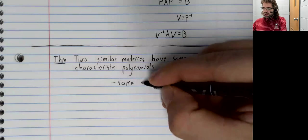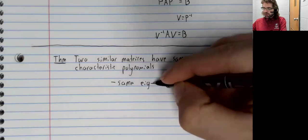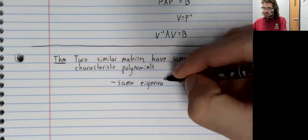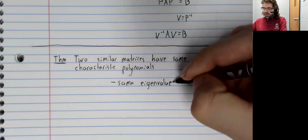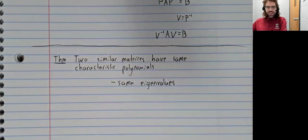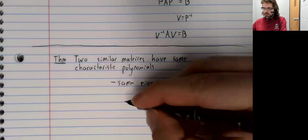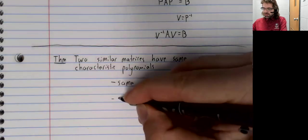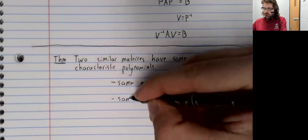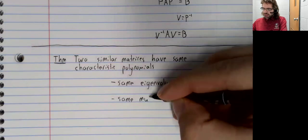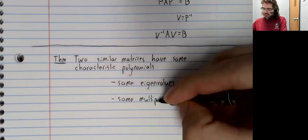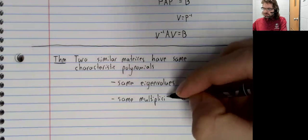Meaning that two similar matrices have the same eigenvalues, but actually something a little stronger than that. Again, eigenvalues are roots.